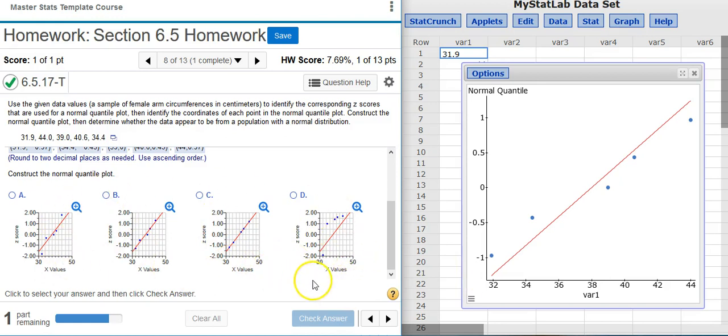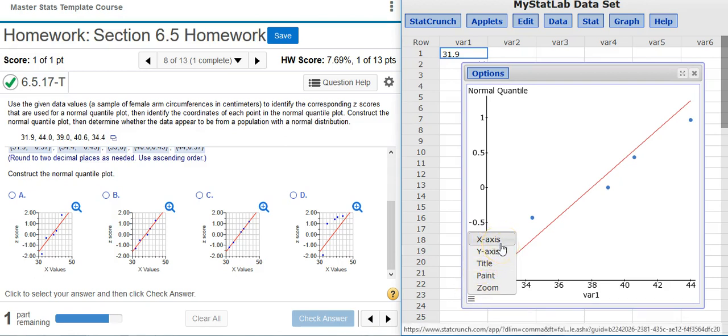Notice here in the answer options the x-axis has a minimum value of 30 and a maximum value of 50, and the y-axis has a minimum value of negative 2 and a maximum value of positive 2. So I'm going to change the axes on my normal quantile plot to match. To do that I'm going to select this little three-line icon in the lower left-hand corner of my graph. And when I left click on that icon I get a menu where I can change the x-axis and the y-axis, as well as change some of the graphical display on the graph.